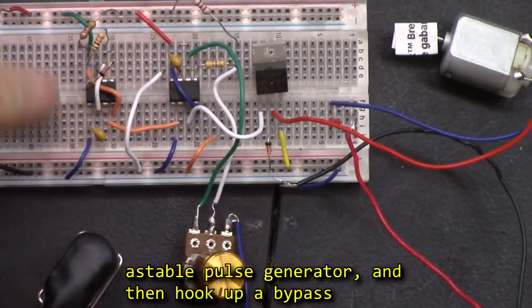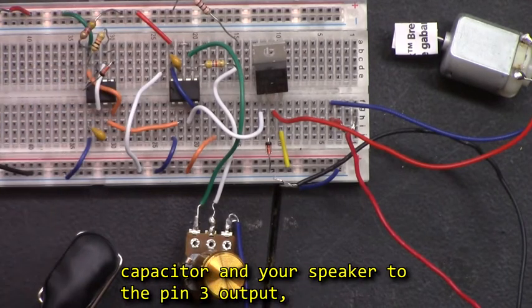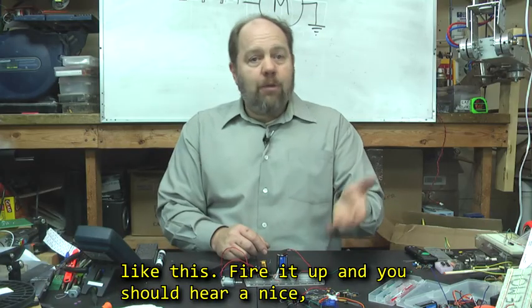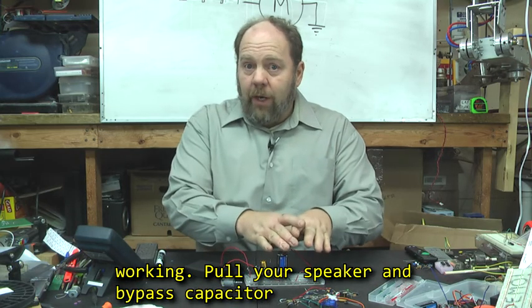If you want to build and test the different parts of the circuit, build the astable pulse generator, then hook up a bypass capacitor and your speaker to the pin 3 output, fire it up and you should hear a nice clean 100 Hz tone.